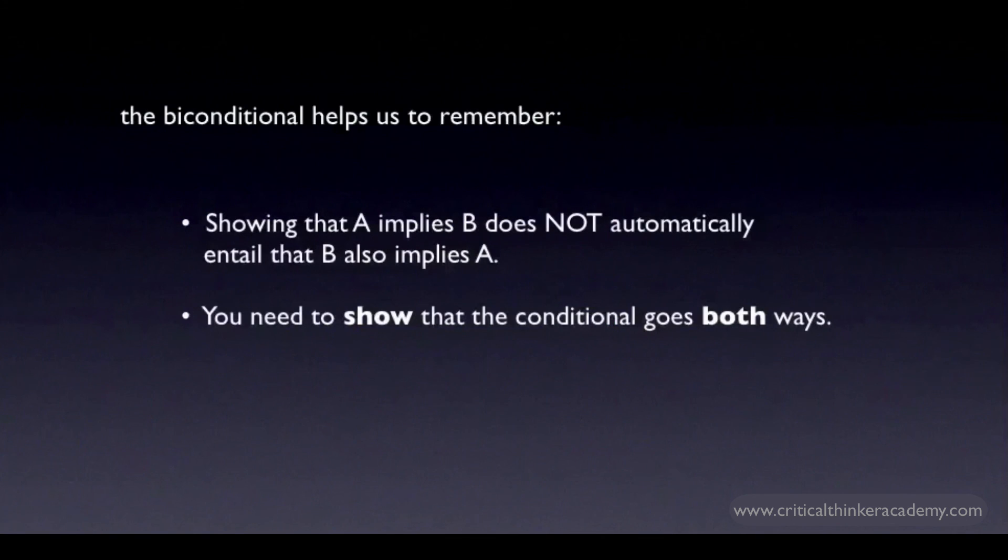One of the helpful things about learning about the biconditional as a concept is that it helps us to remember that ordinary conditionals are only half a biconditional. They only go one way. If A implies B, it doesn't follow you can go backwards and say that B implies A. It reminds us that you need to argue or demonstrate that you can run the inference in the other direction as well.